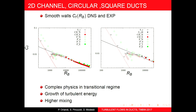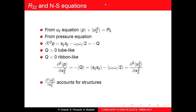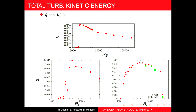In the transitional region there is a large growth of turbulent kinetic energy, which is related to mixing — the central topic. For the channel, when there is a transition, there is a sharp growth of turbulent kinetic energy, and then it decreases as Reynolds number increases.